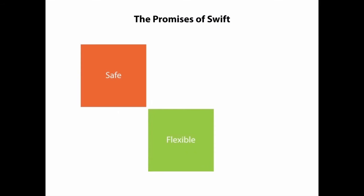Apple created Swift with these goals in mind. First, they wanted it to be safe — building safety into every part of the language should help prevent bugs before they ever get written. They wanted the language to be flexible; Swift adopts a lot of the power and flexibility of functional programming while still maintaining basically an object-oriented approach. Developers should also be more productive in Swift.